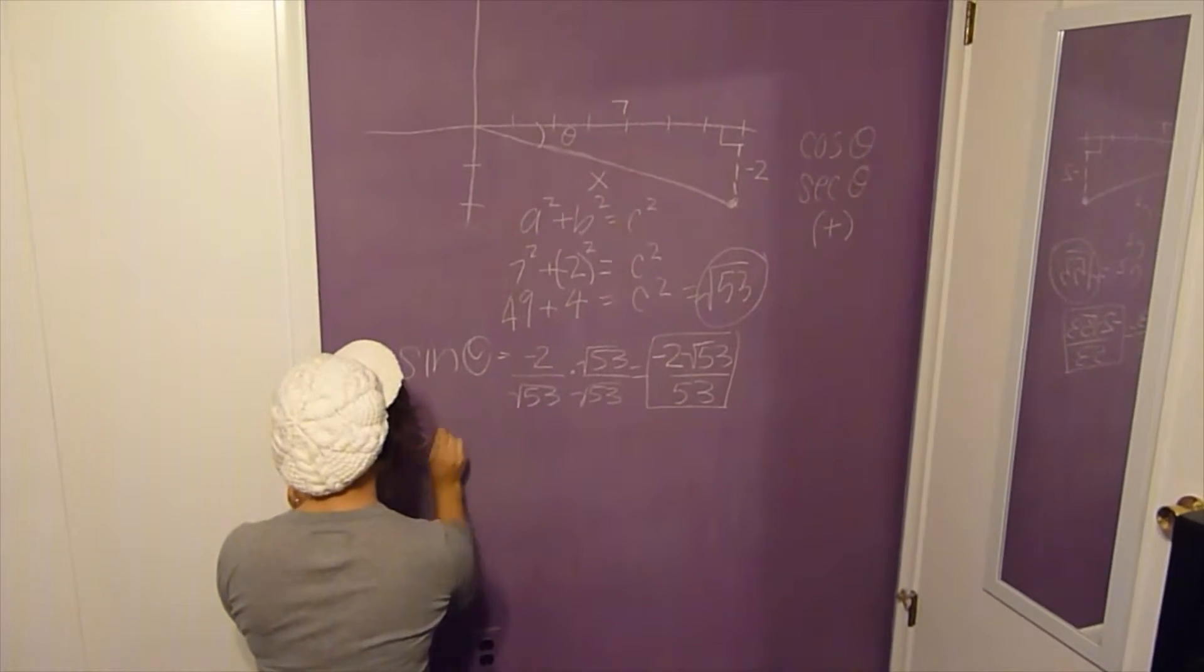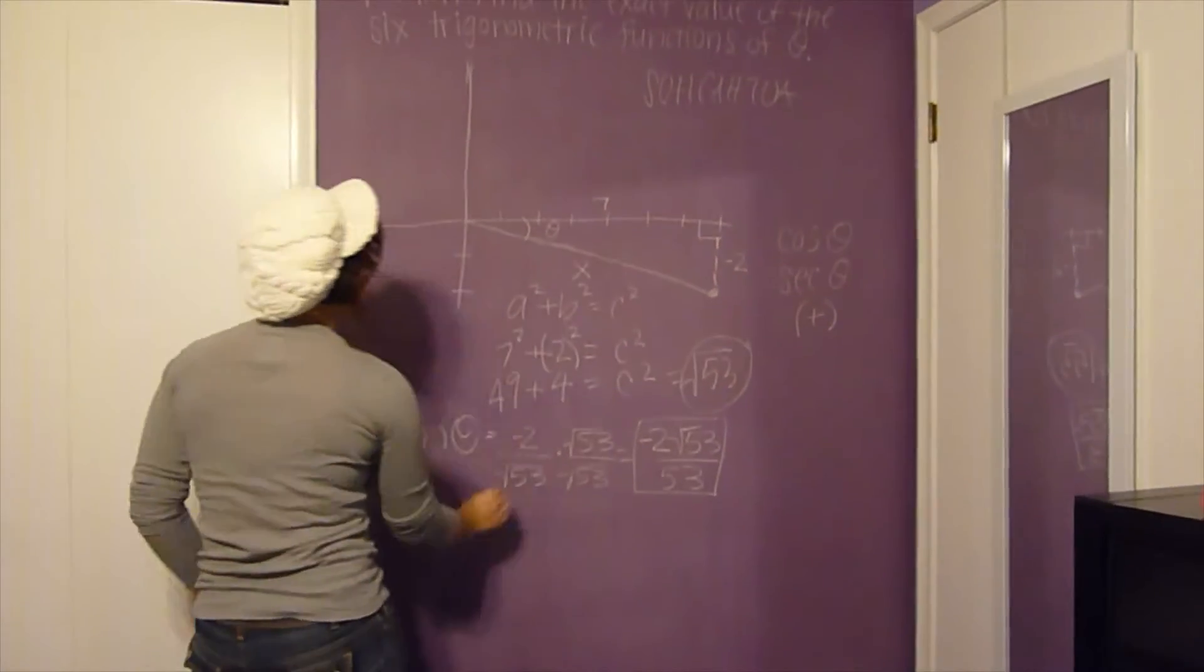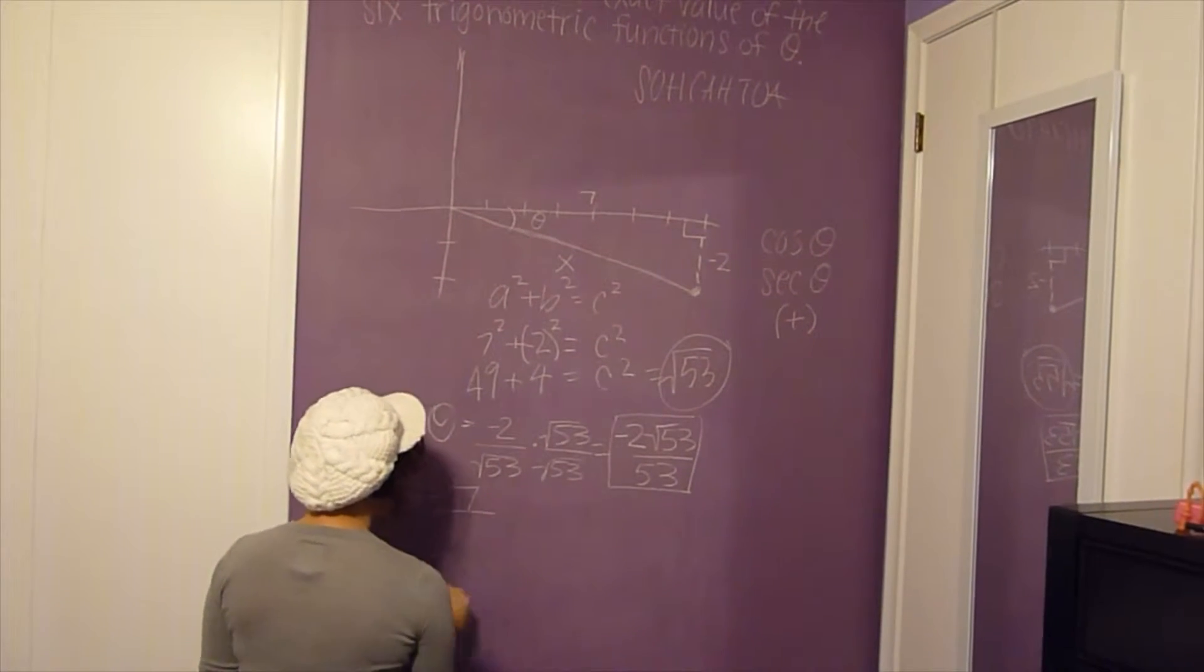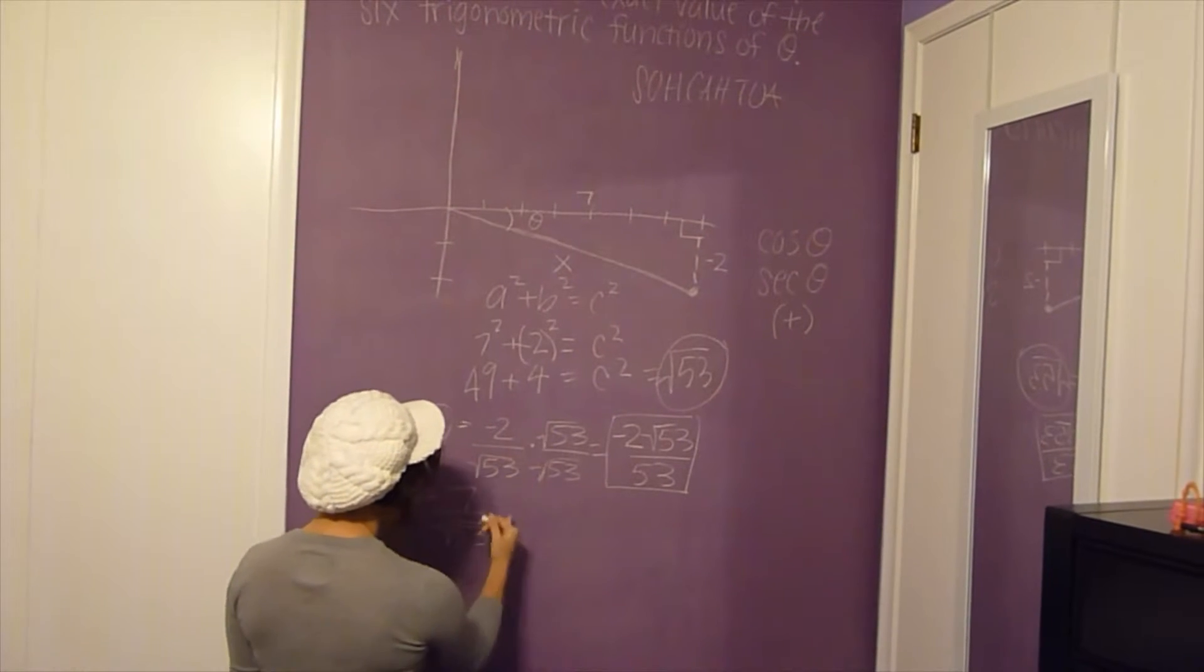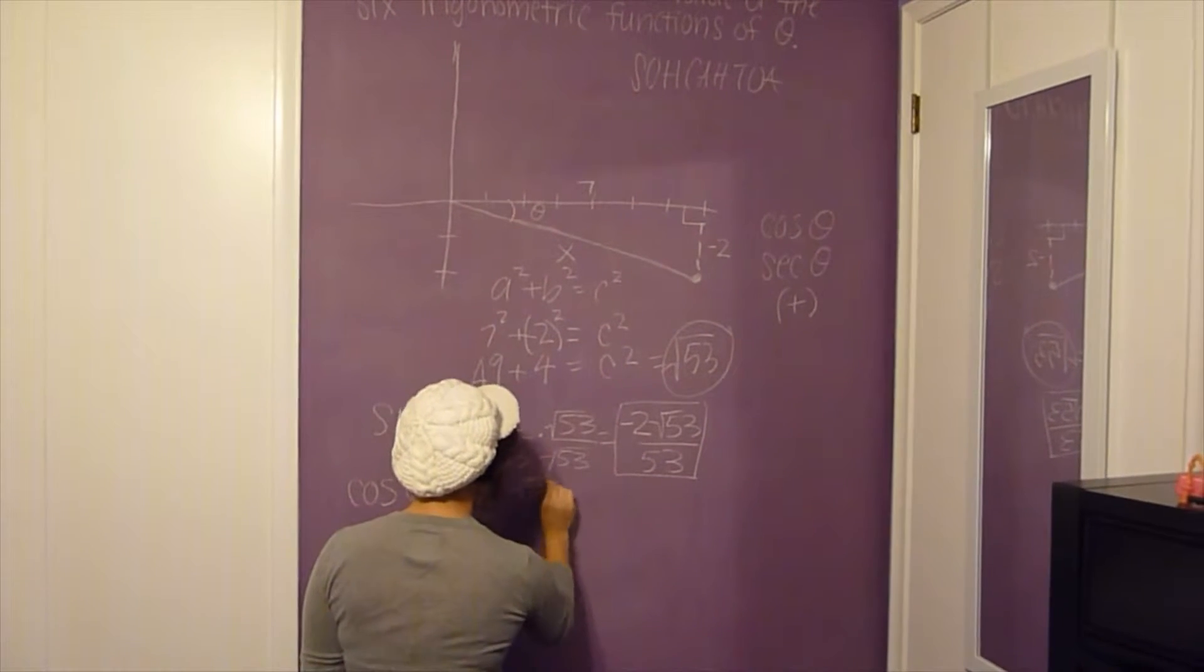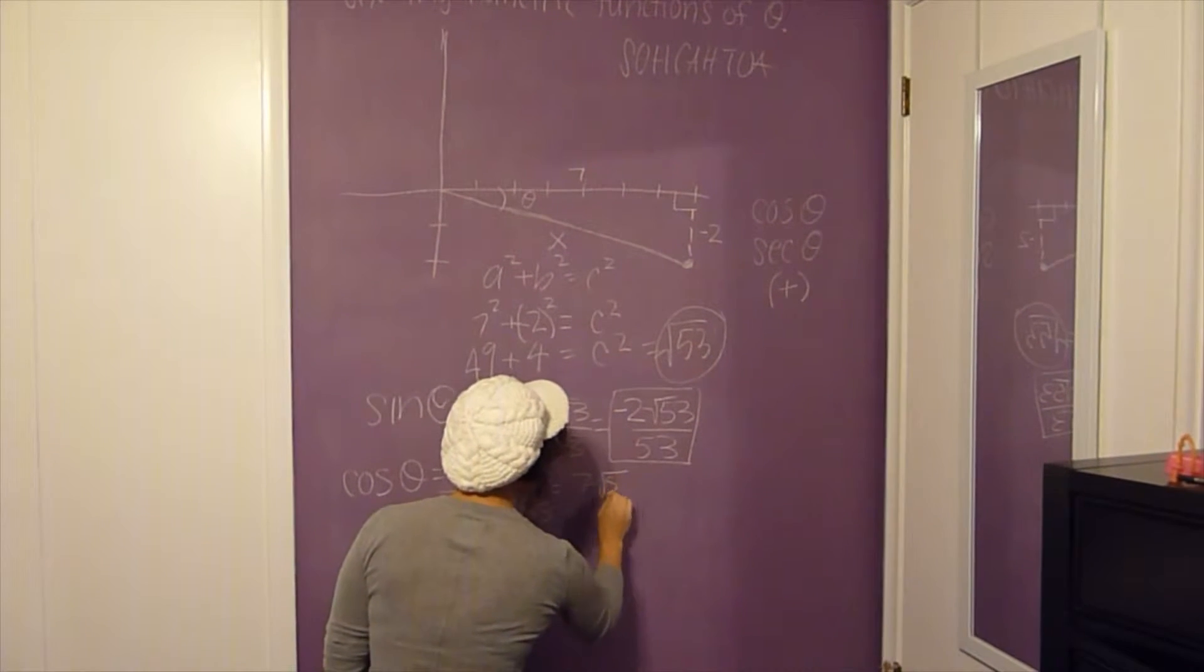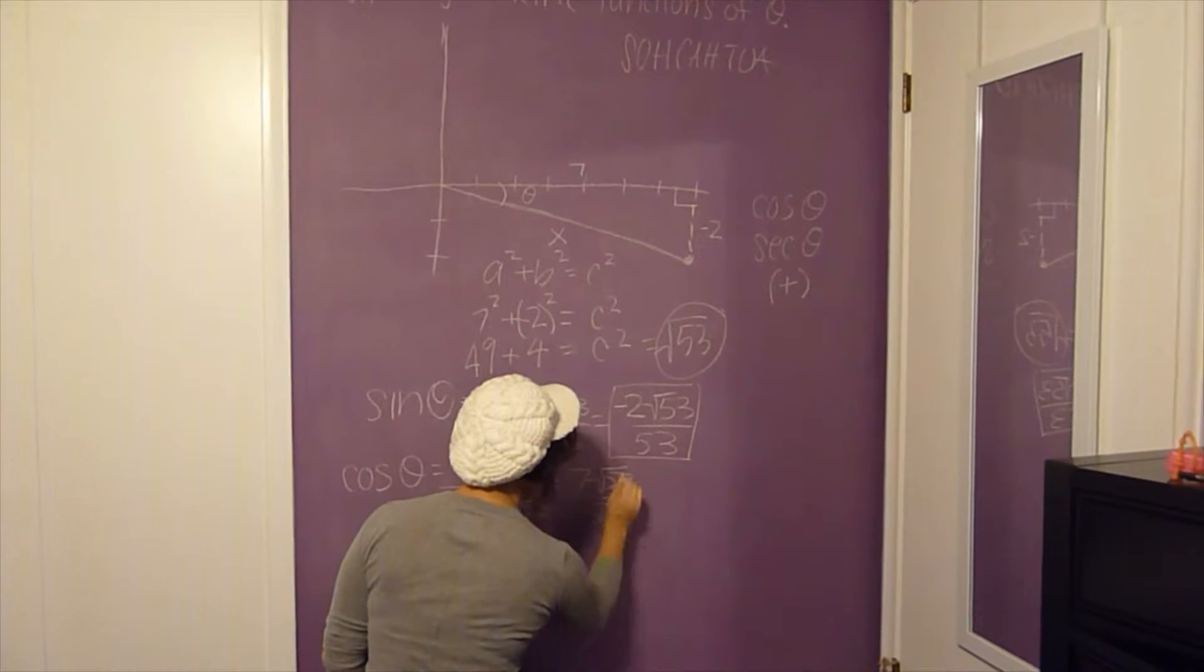Cosine of theta. For your cosine of theta, we're going to do adjacent over hypotenuse. So you're going to have the same type of problem: 7 over √53. And you can't have the square root in the bottom, so multiply from the top. So you'll have 7√53 over 53, right there, cosine.